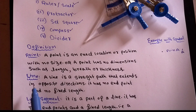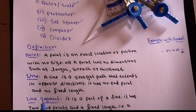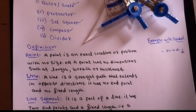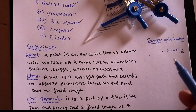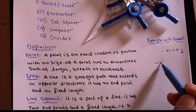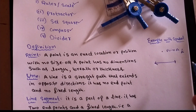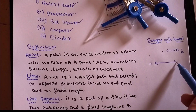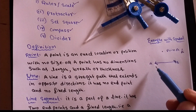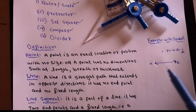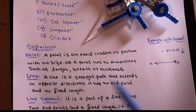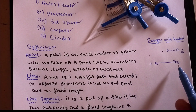The second topic with us is a line. A line is a straight path that extends in opposite directions. It has no endpoint and no fixed length. A line is a straight path that extends in both directions - it is infinite on both sides. There is no endpoint, meaning it goes on infinitely in both directions.